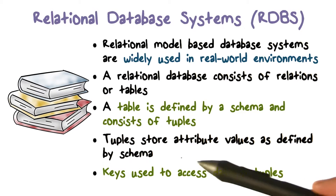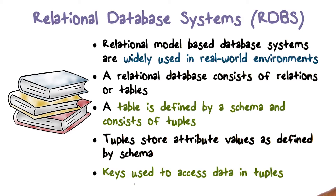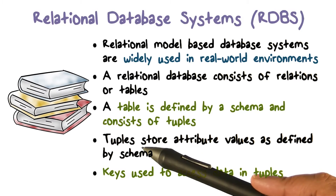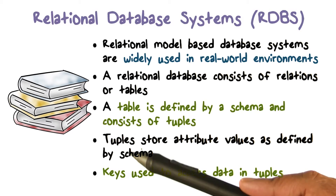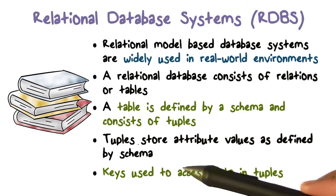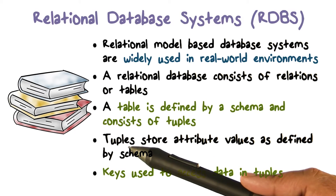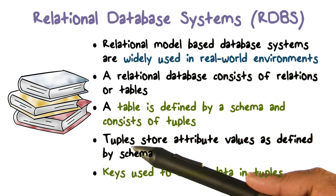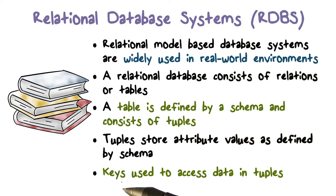Some of those attribute values are kind of special — they're called keys. There are various types of keys: primary and foreign and so on. Keys are basically values that uniquely identify a given tuple or row. For example, if a database stores information about each employee, there's going to be a tuple for each employee. If you identify employees by their social security number, then that's going to be the key value in that tuple, and it uniquely identifies that tuple because social security numbers are different for different users.